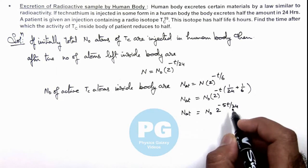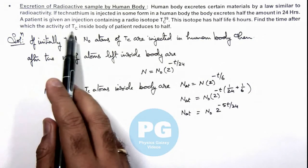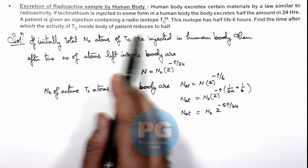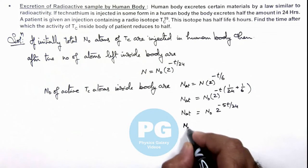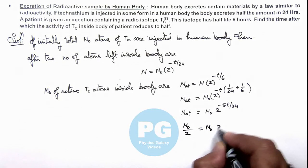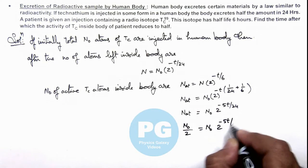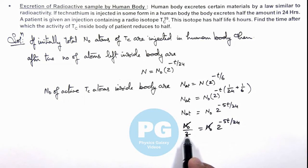We are required to find the time after which the activity of TC inside the body of patient reduces to half. That means total number of atoms reduces to N₀/2. This is N₀ × 2^(-5t/24). So here N₀ gets cancelled out and this is 2^(-1). So this gives 5t/24 = 1.